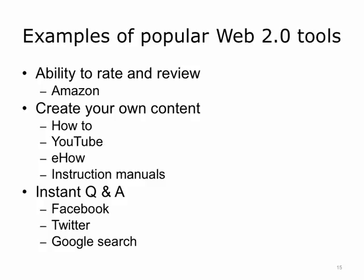The characteristics and features of Web 2.0 tools make them natural social learning and informal training tools. For example, learners in a healthcare organization could rate and review various training objectives in a similar way that Amazon.com users rate books. Staff and healthcare providers could create their own content, such as short instruction manuals or even short training videos in the manner of YouTube or eHow.com. Employees can instantly post questions and get answers, synchronously and asynchronously, using tools similar to Facebook, Twitter, and a Google search.